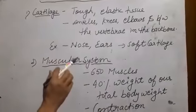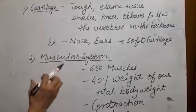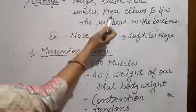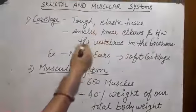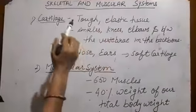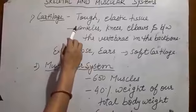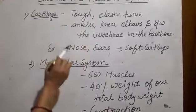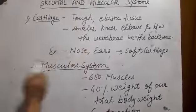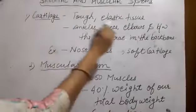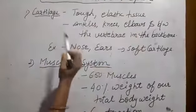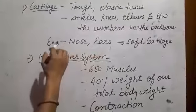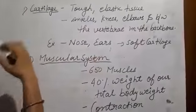Movement of the body happens when cartilage and bones work together with the muscles. The ankles, knees, and elbows are moved. These movements involve bones, cartilage, and muscles — they participate together in three parts.